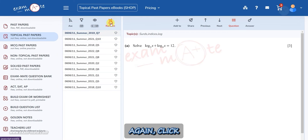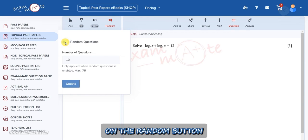To see all the questions again, click on the random button and turn off the random questions and click on the update button.